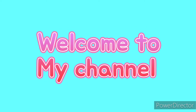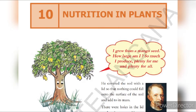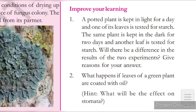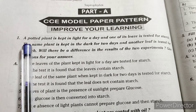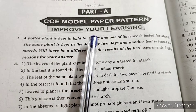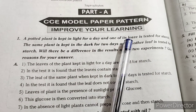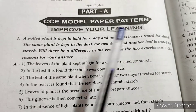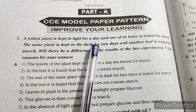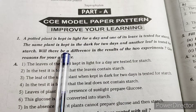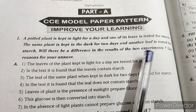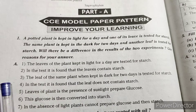Hello kids, today we are going to see 7th class science, 10th lesson: Nutrition in Plants, question answers. First question: A potted plant is kept in light for a day and one of its leaves is tested for starch. The same plant is kept in the dark for two days and another leaf is tested for starch. Will there be a difference in the results of the two experiments? Give reasons for your answer.